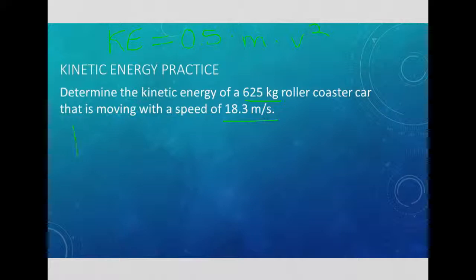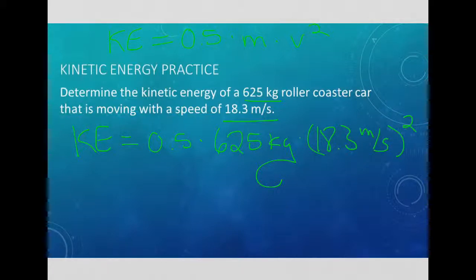So here we have our kinetic energy equation, KE equals 0.5 times our mass, which is in kilograms, 625 kilograms, times our speed of 18.3 meters per second squared. This gets us a kinetic energy of, putting in our calculator, 0.5 times 625 times 18.3 squared.